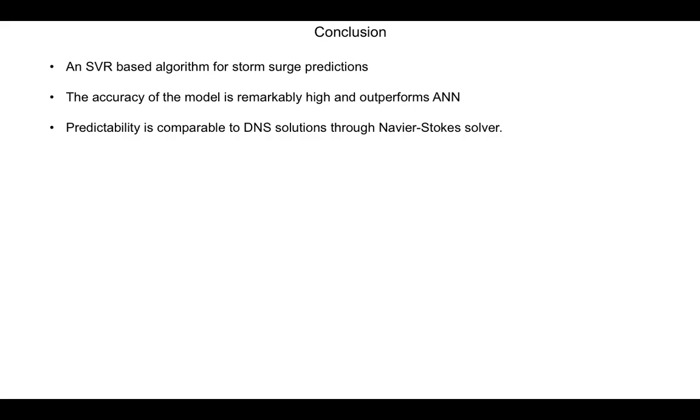In fact the paper goes on to compare the solutions with traditional numerical DNS solvers and they show that all the predictions are as accurate as that of a DNS solver but are quite good in comparison to deterministic algorithms and hence is a good choice for machine learning algorithm to predict storm surge problems. And that's it, thank you.